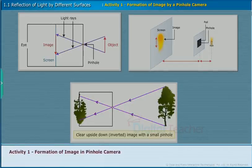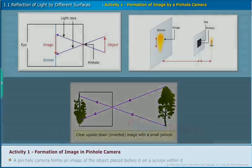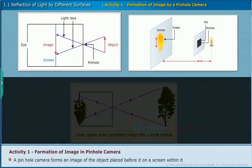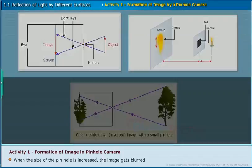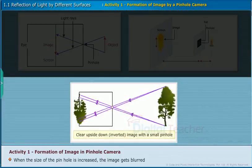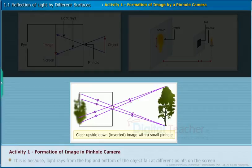Activity 1: Formation of image in a pinhole camera. A pinhole camera forms an image of the object placed before it on a screen within it. When the size of the pinhole is increased, the image gets blurred. This is because light rays from the top and bottom of the object fall at different points on the screen.